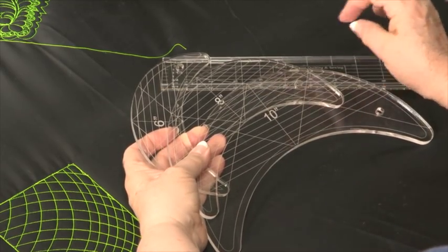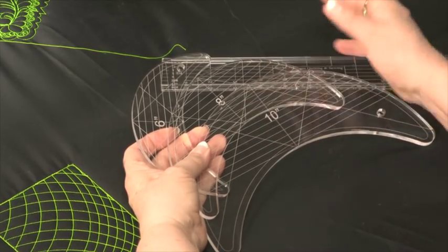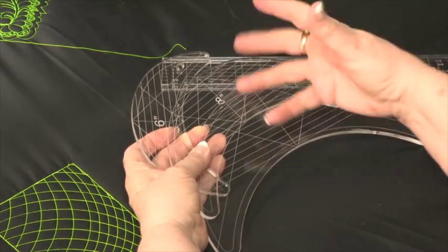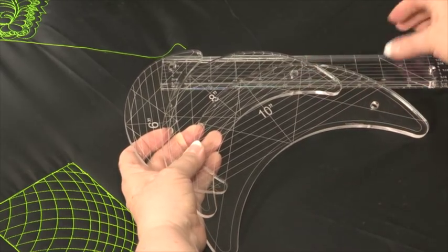Remember you need an extended base to work with your tools on your machine. You can get these mini arch guides at Linda's Electric Quilters.